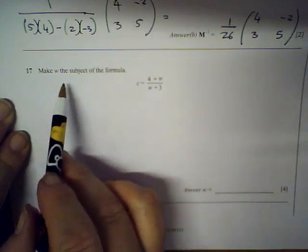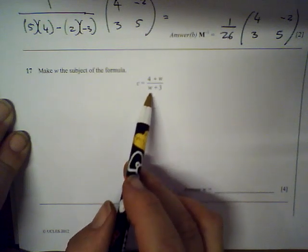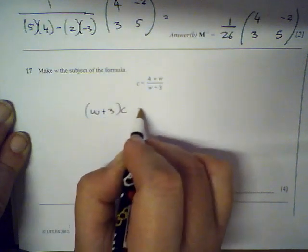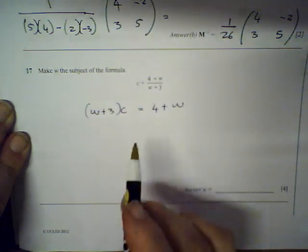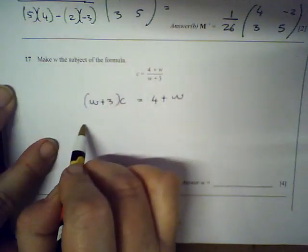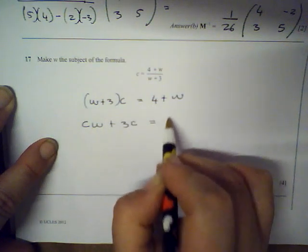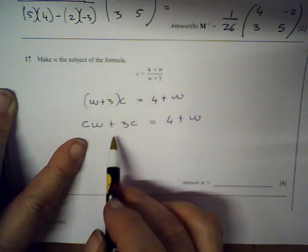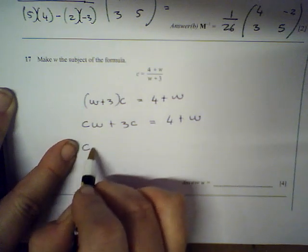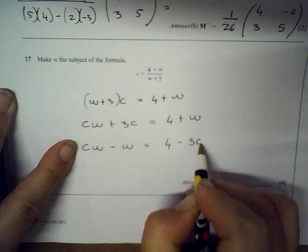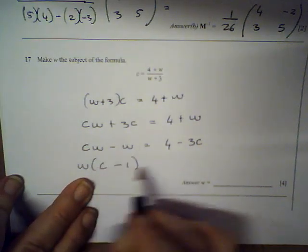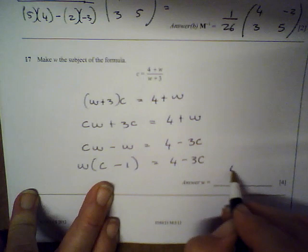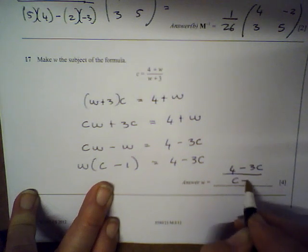Make w the subject of the formula. Multiply both sides by (w + 3): c(w + 3) = 4 + w. Distribute: cw + 3c = 4 + w. Move w terms to one side: cw - w = 4 - 3c. Factor: w(c - 1) = 4 - 3c. Divide: w = (4 - 3c)/(c - 1).